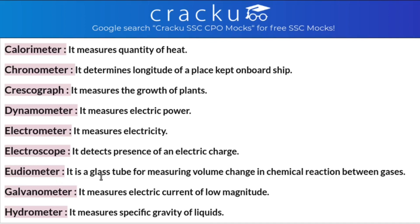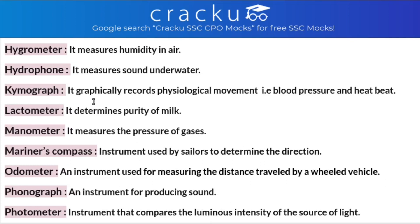Eudiometer: it is a glass tube for measuring volume change in a chemical reaction between gases. Galvanometer: it measures electric current of low magnitude. Hydrometer: it is used to measure the specific gravity of liquids.